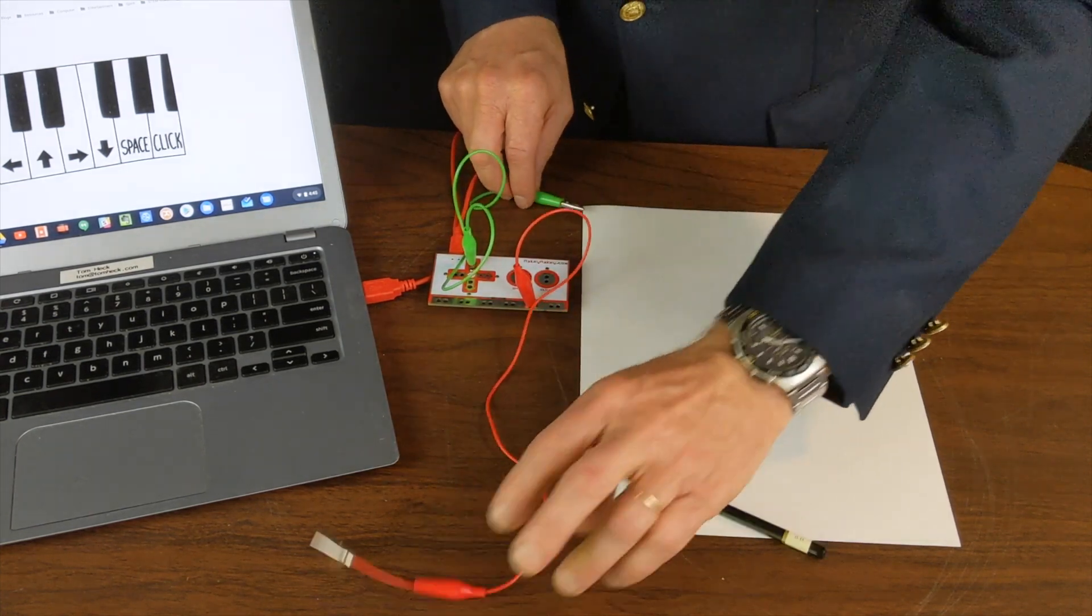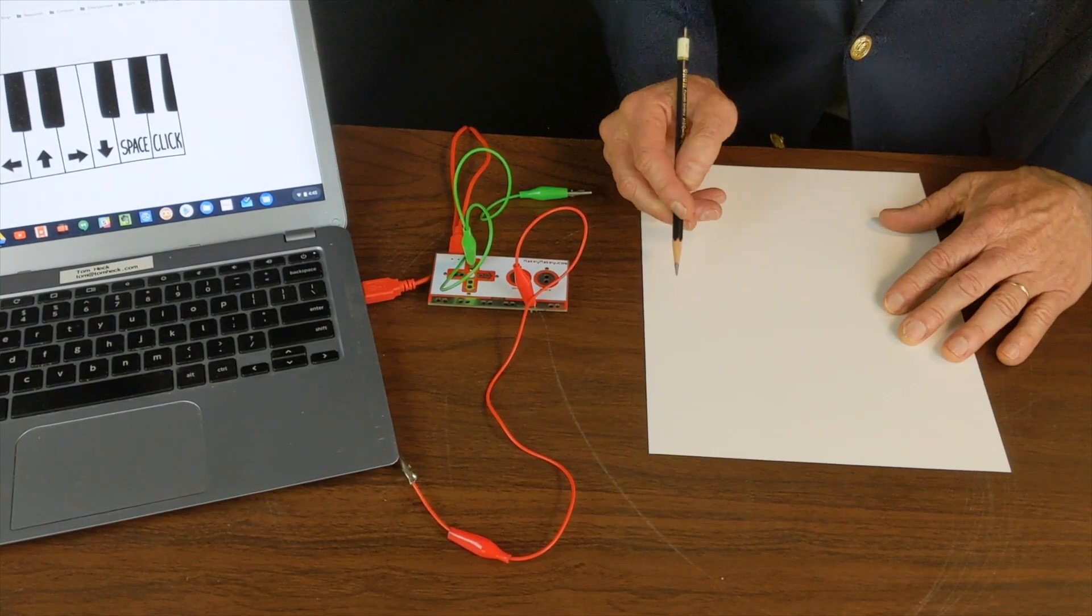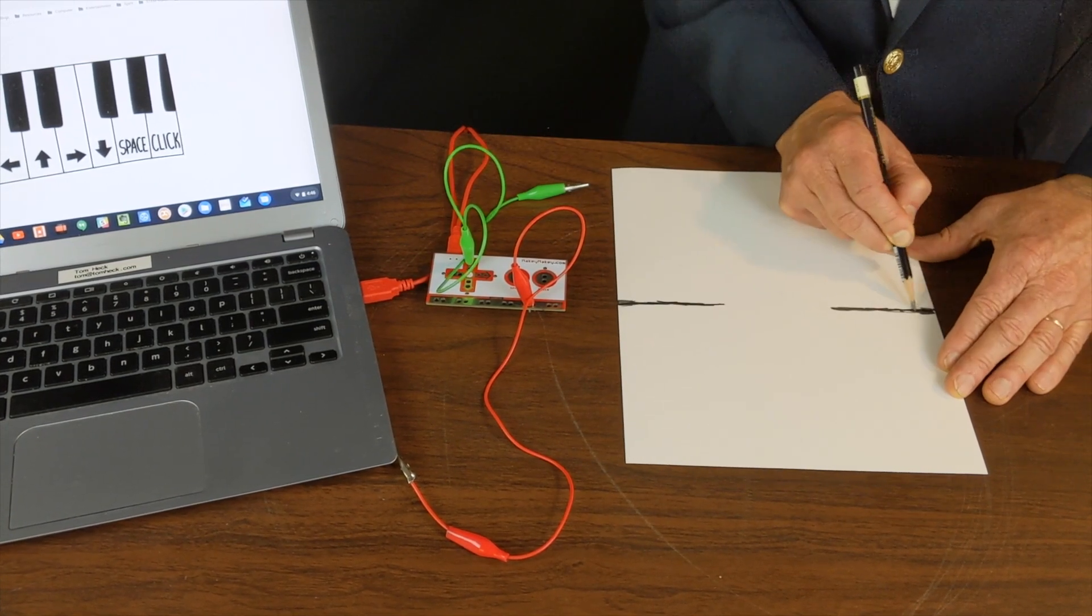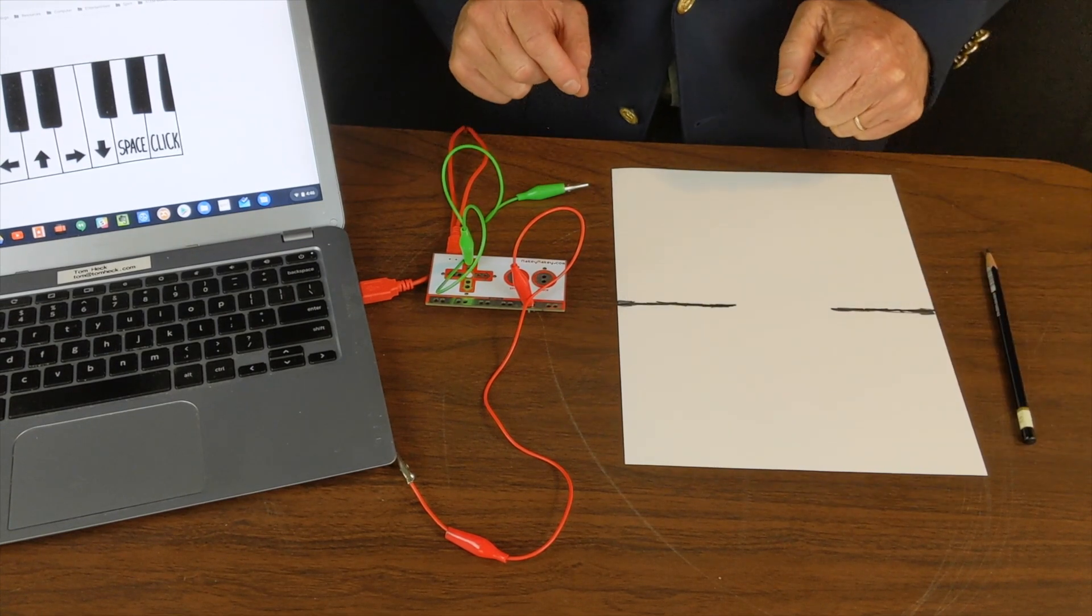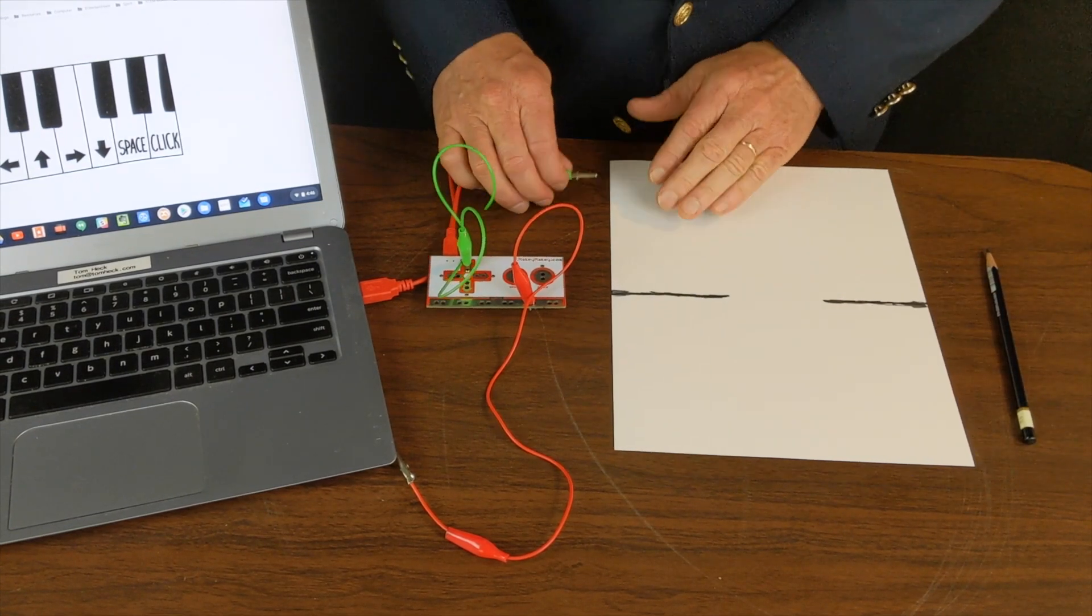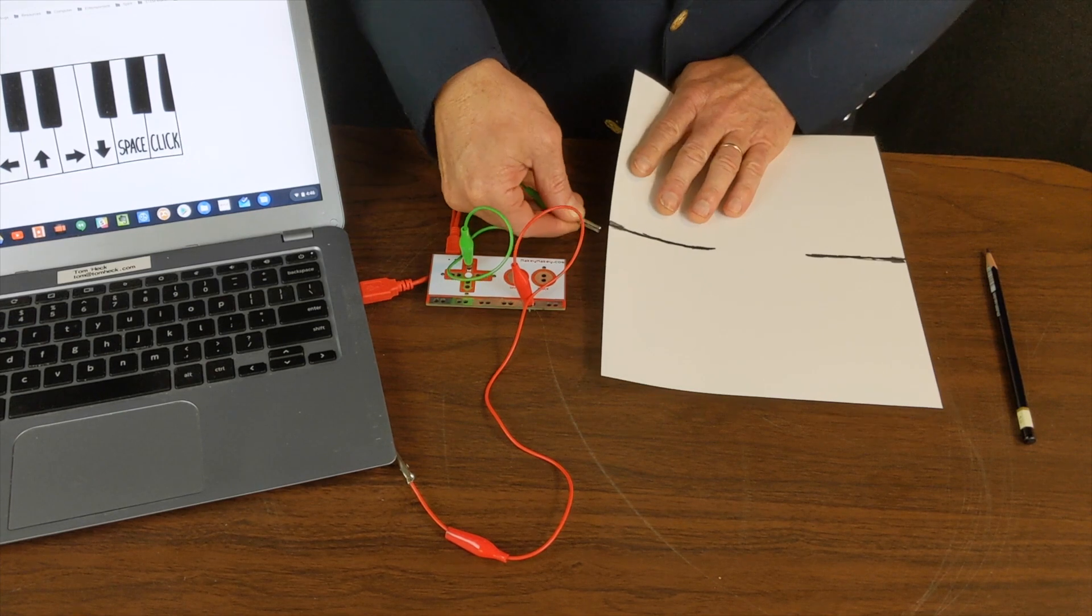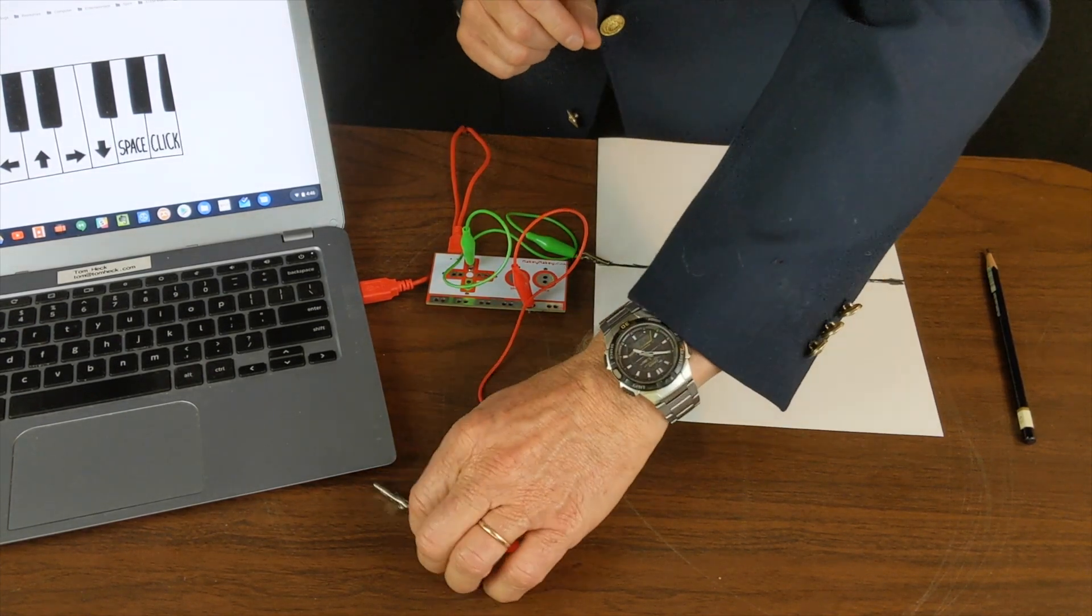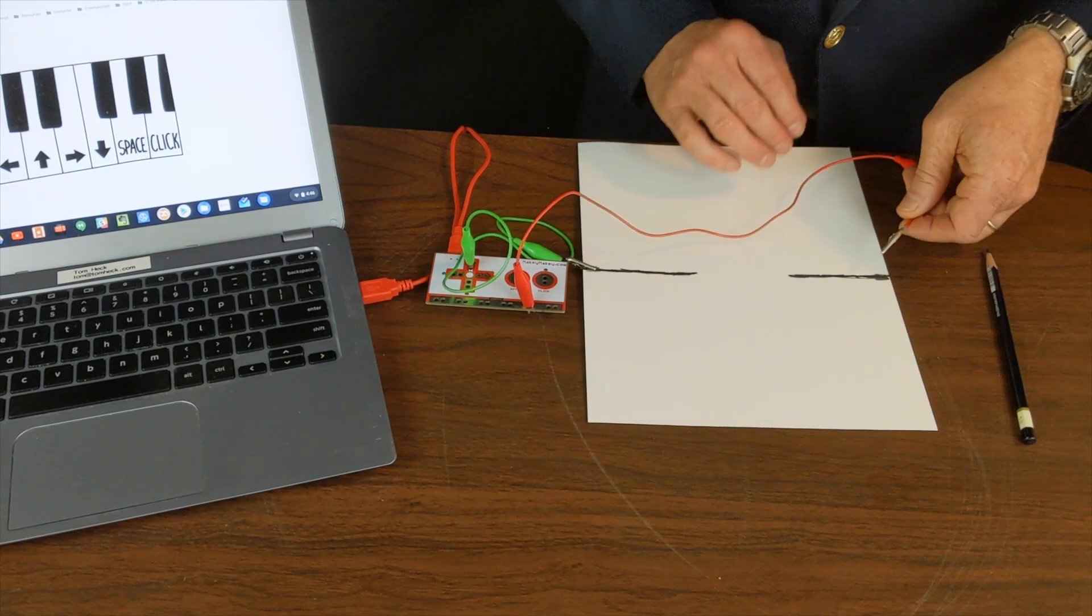Now, for my drawing, I'm going to make a very simple drawing. I'm going to make a very dark line here. Now, let's connect the alligator clips. One to here, and another alligator clip over to here.